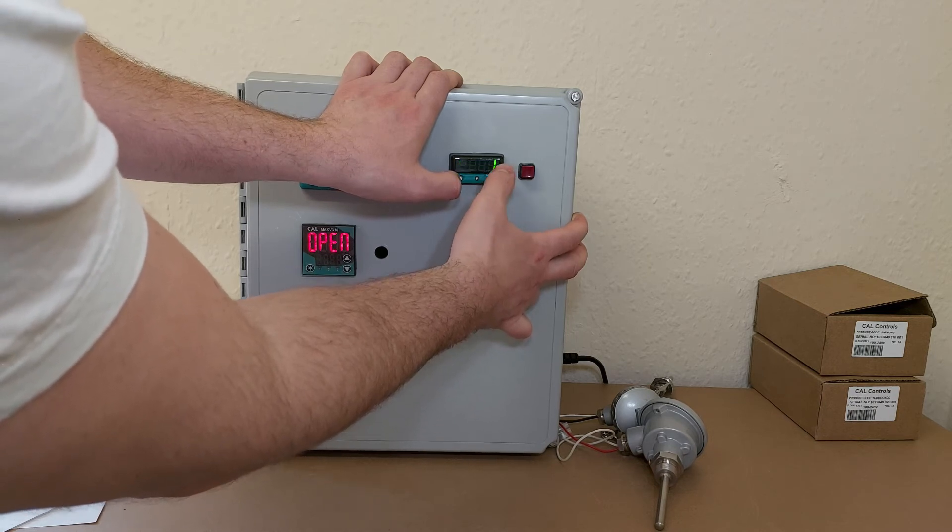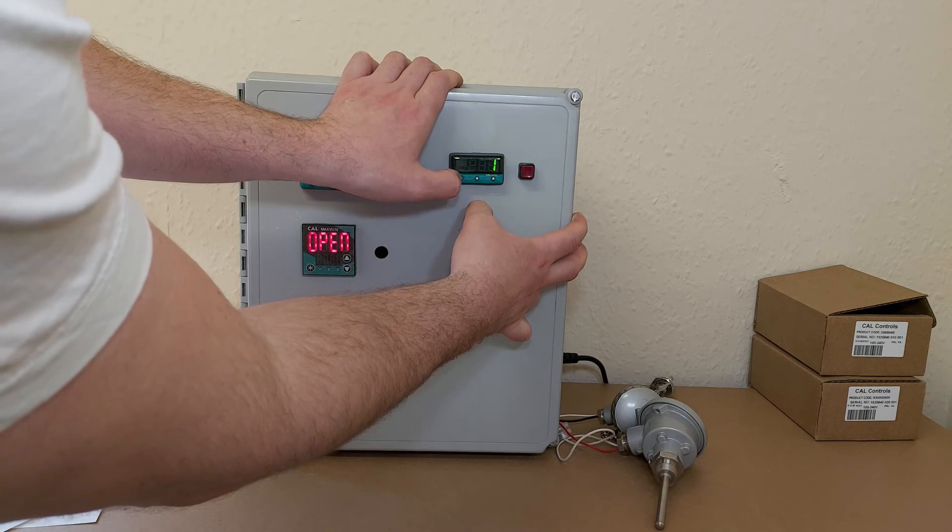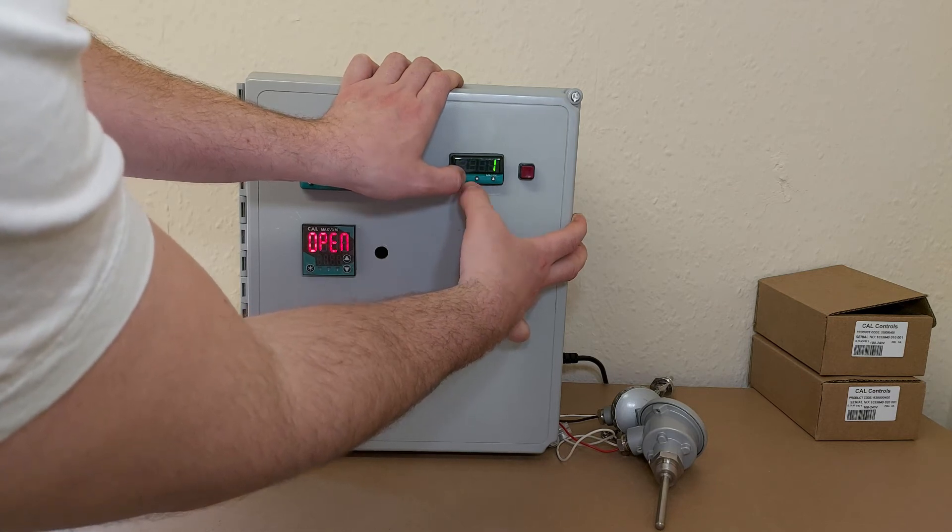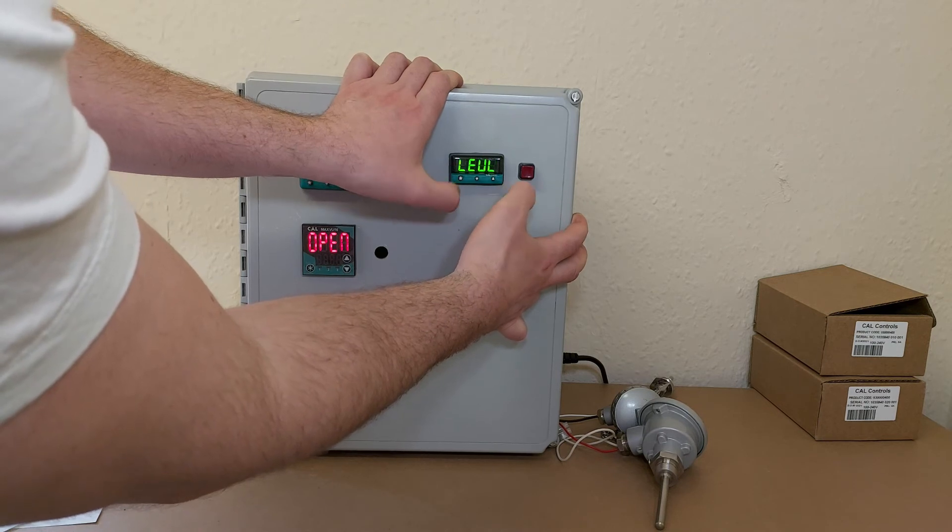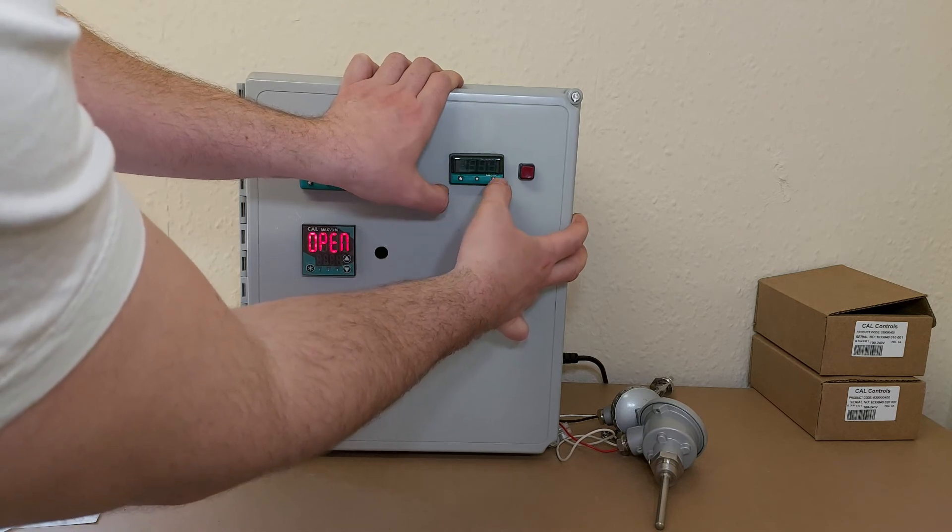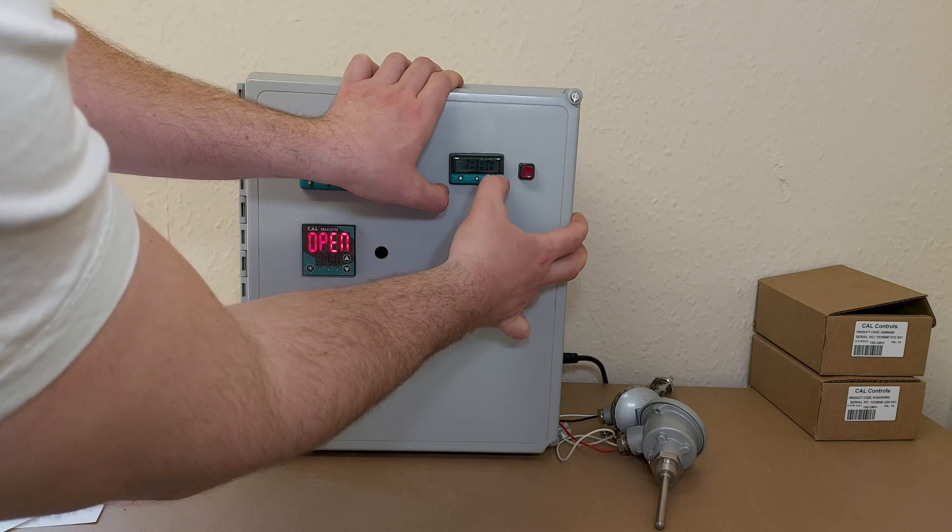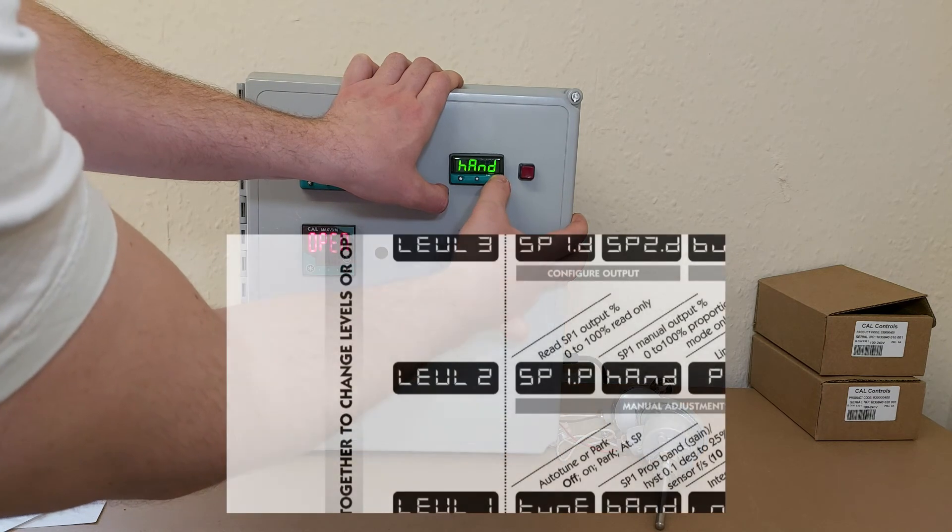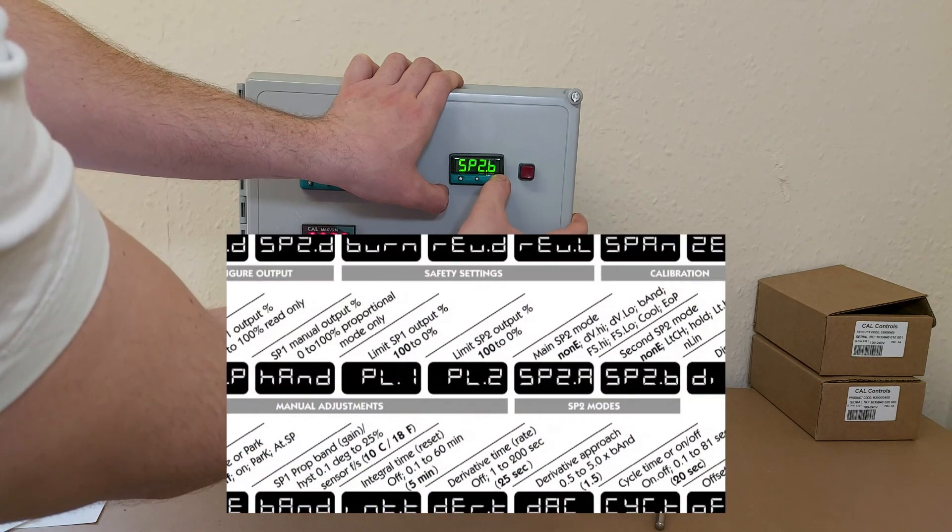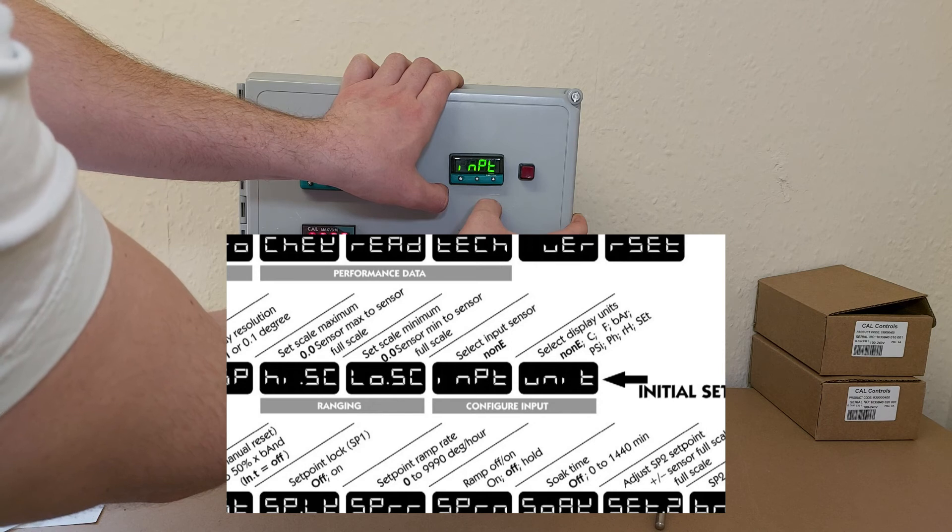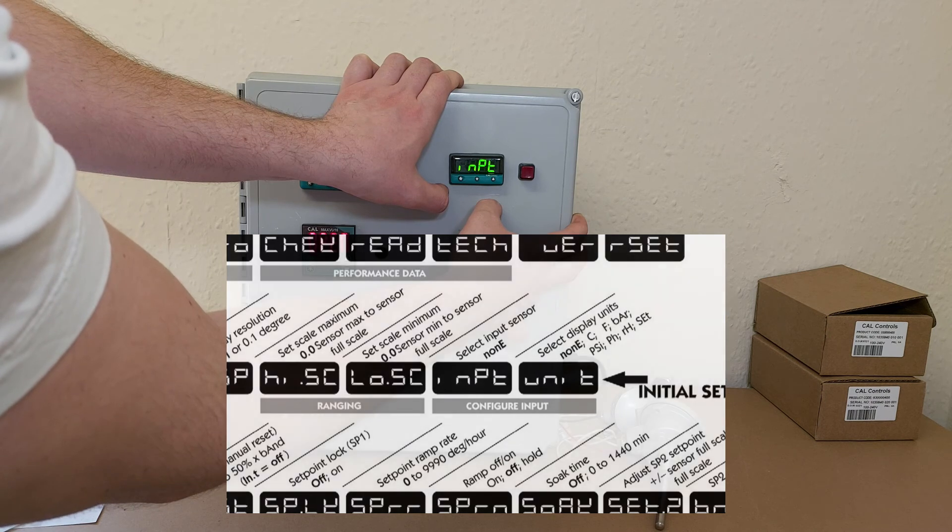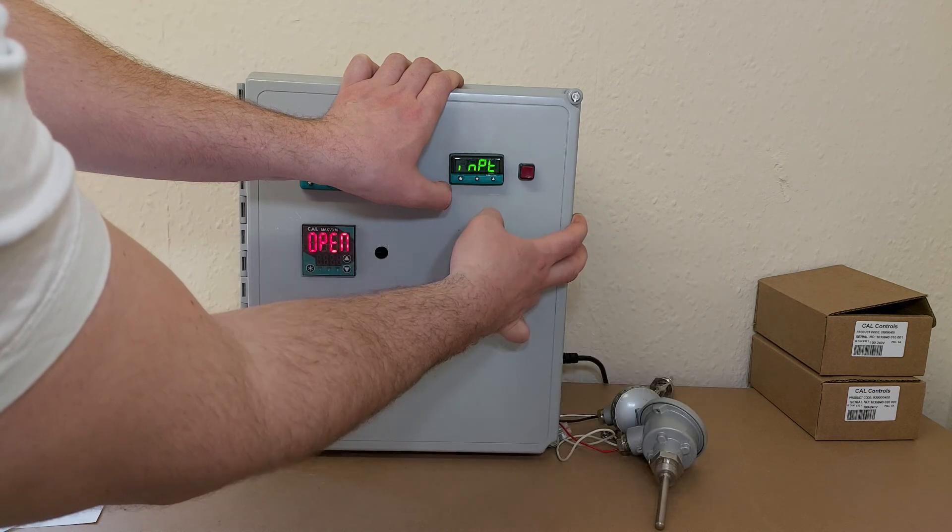And we are at level one at the moment. We want to go into level two by holding the star. Going up to two. And now we can scroll through the level two menu until we get to input. There we are. And we want to select RTD and it's set up for RTD already.